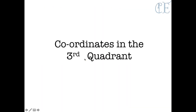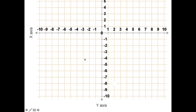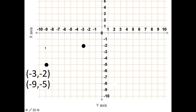Quadrant 3 has both negatives. We still go x first, then y. For example, (−3, −2), (−9, −5), (−7, −9). Here we also have (0, −6) — zero means you haven't moved anywhere on the x-axis, and you've just gone to minus six on the y-axis.